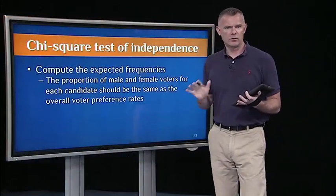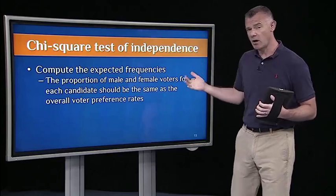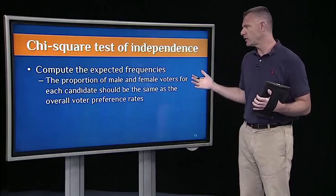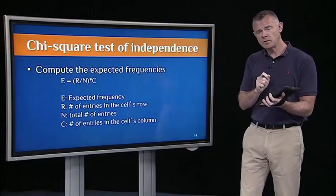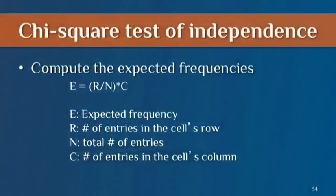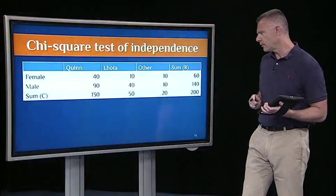The only trick here — and we'll do this once in a hand calculation, and going forward in lab and beyond we'll do it in R — is that we have to calculate the expected frequencies in all rows and columns. Because there's a different number of males and females in the sample, that's a little bit tricky. To compute the expected frequencies, we calculate the number of people in a row over the total number of people in the sample, multiplied by the number of people in a column.